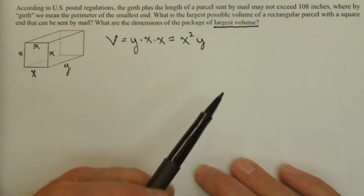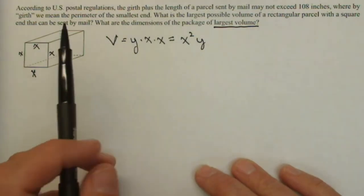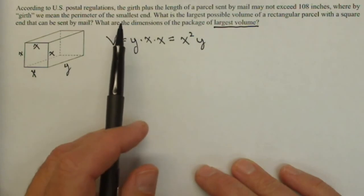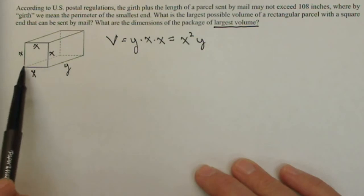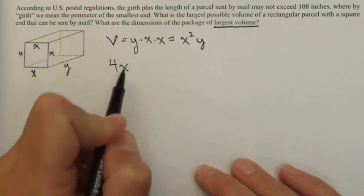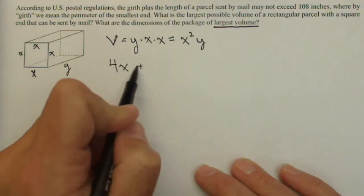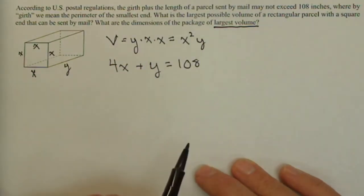Notice it's in terms of two variables, so we'd like to have a constraint. Well, the problem tells us that the girth plus the length has to be 108 inches. So our girth is x plus x plus x plus x, so 4x plus our length y. That's going to be 108 as that's our constraint.